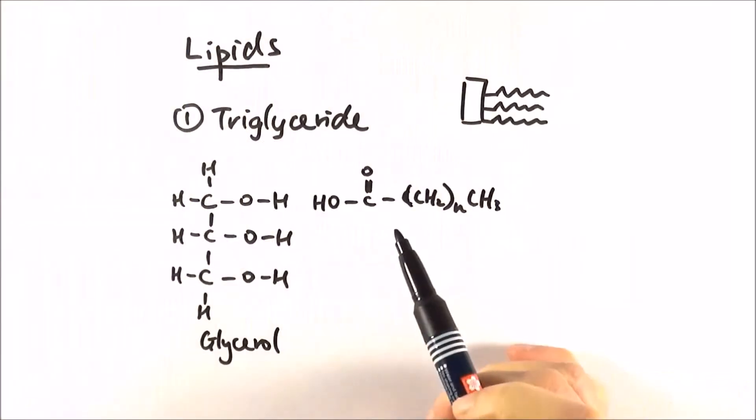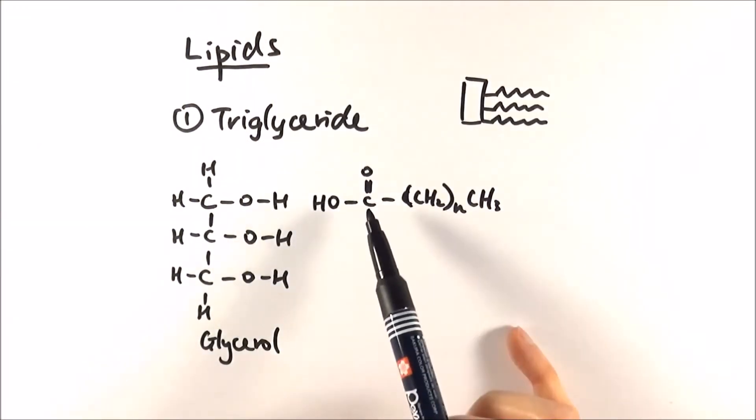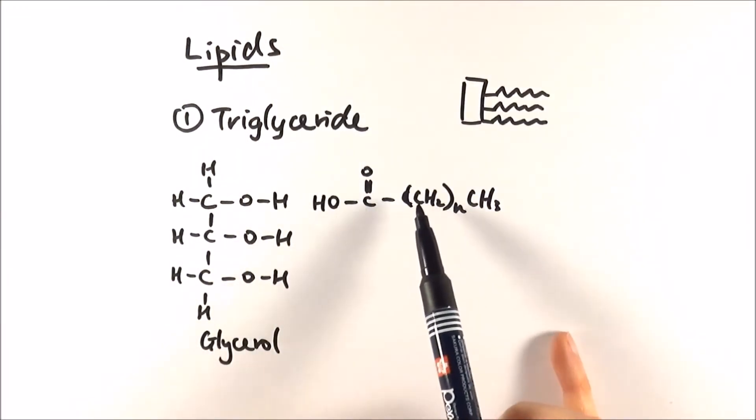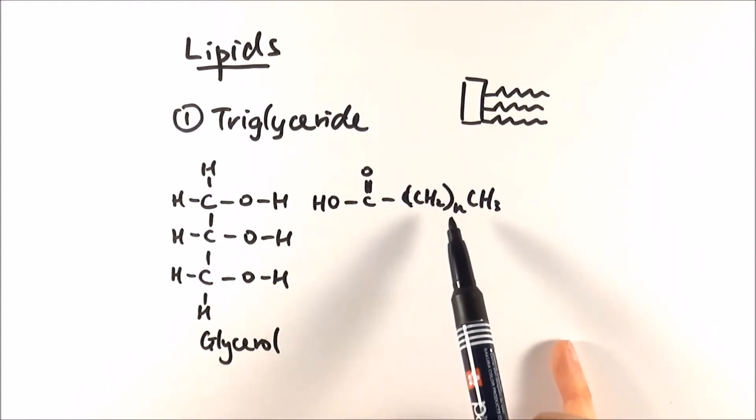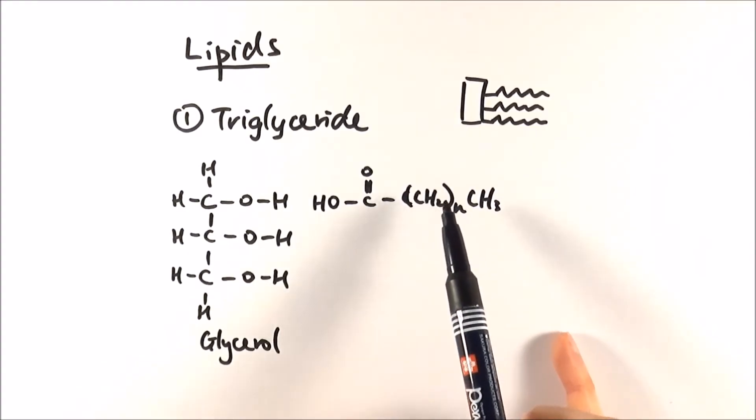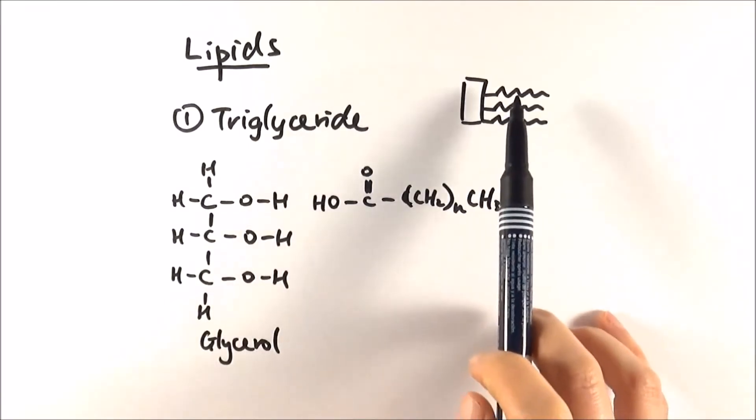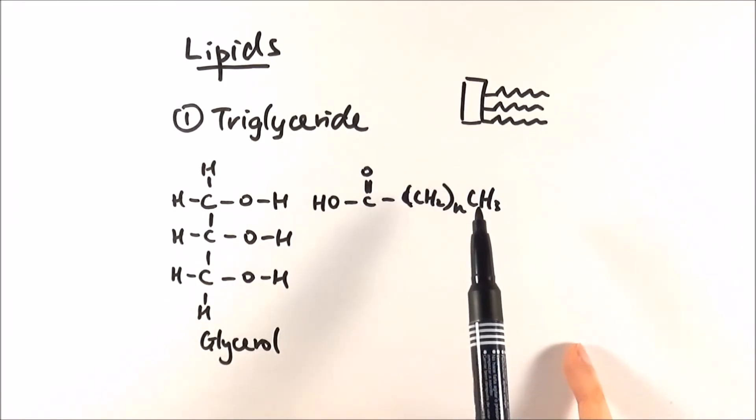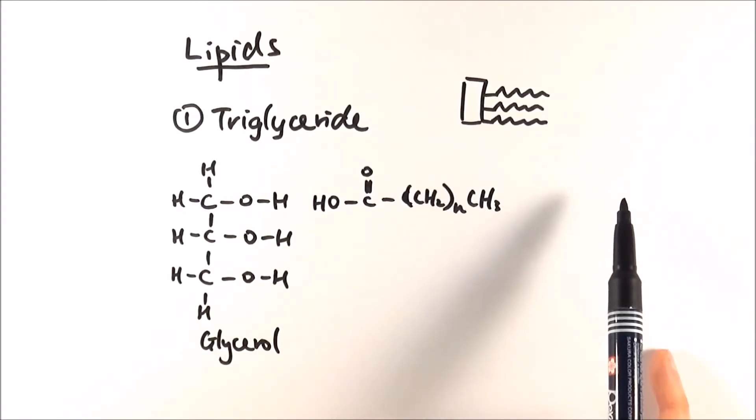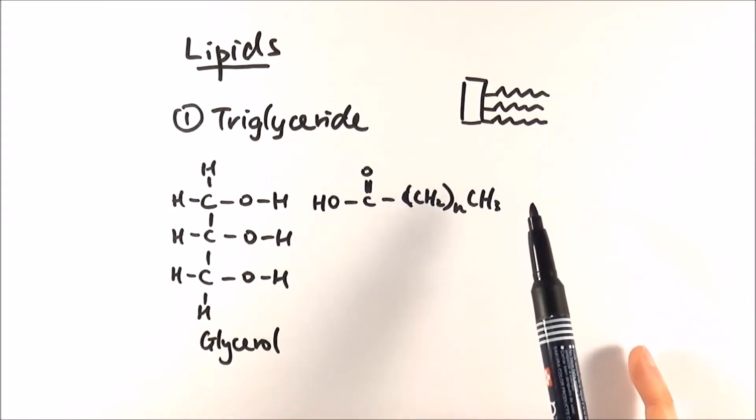As you can see here, we've got the COOH, that's the carboxyl group, and then it's connected to CH2 brackets N. That means it's actually a fatty acid chain. Each of these little kinks refers to a carbon. It's made up of lots and lots of CH2s that make up the whole chain, and in the end they've got CH3. A typical one could be about 18 carbons long.